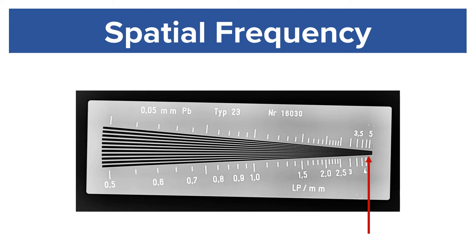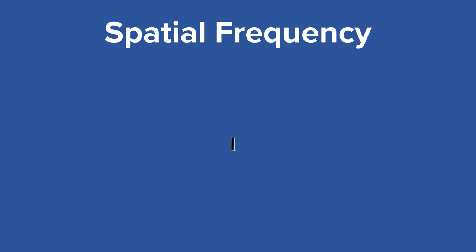Let's zoom in on a single line pair. Now we'll draw two lines to represent one pair of lines, also known as a line pair.